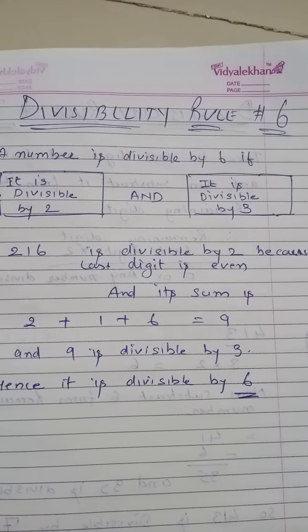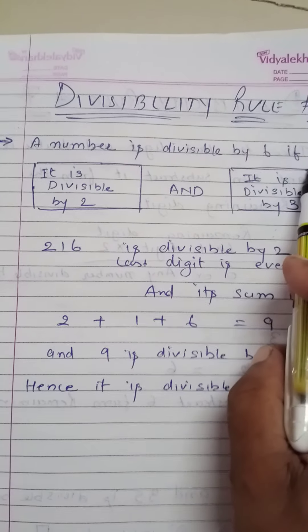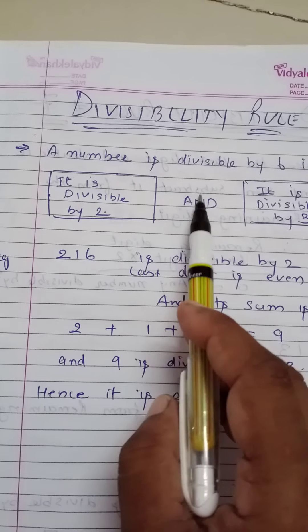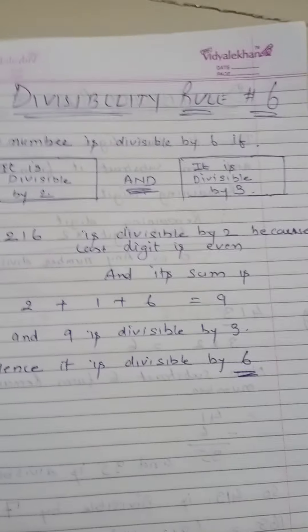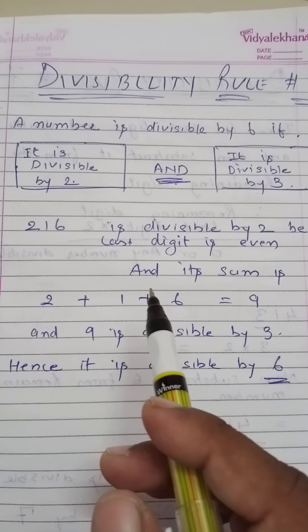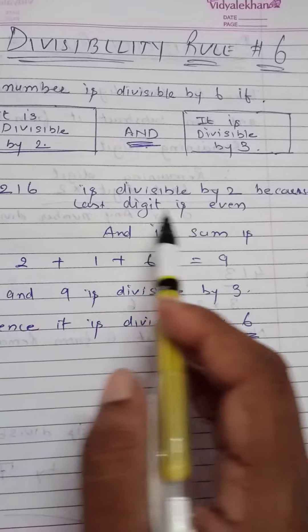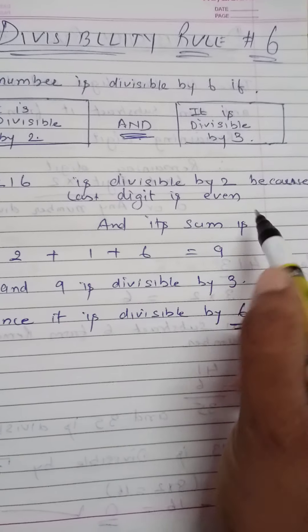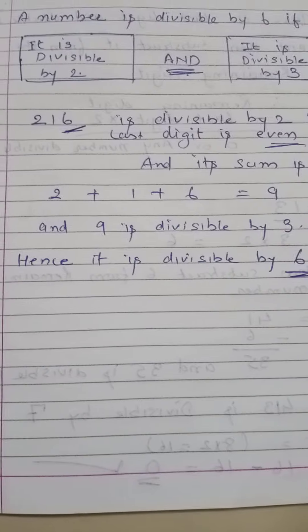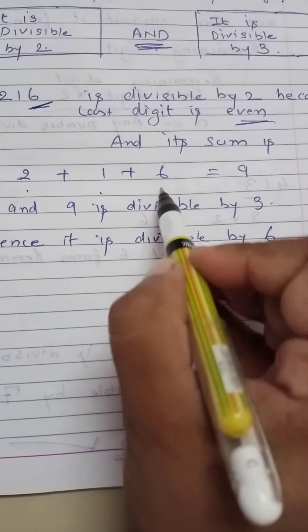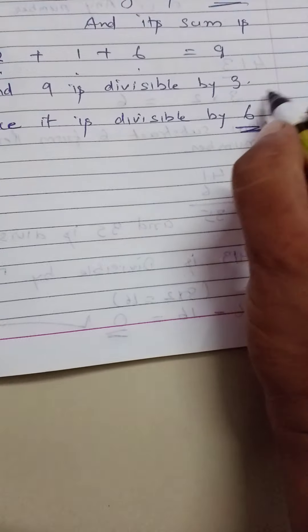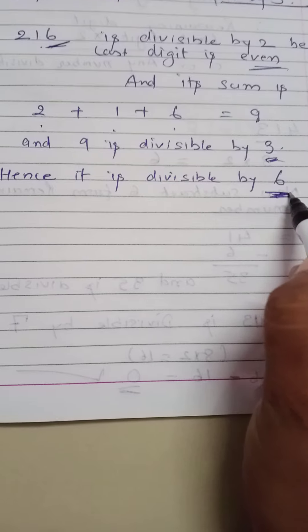The divisibility rule of 6: a number is divisible by 6 if it is divisible by both 2 and 3. For example, 216 is divisible by 2 because the last digit is even. And if we check divisibility by 3 — the sum 2 plus 1 plus 6 equals 9, and 9 is certainly divisible by 3. Since both conditions are satisfied, 216 is divisible by 6.